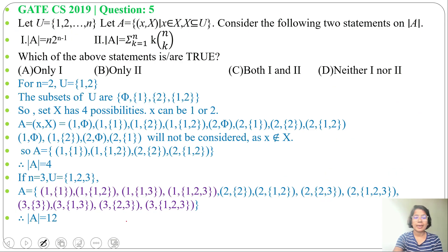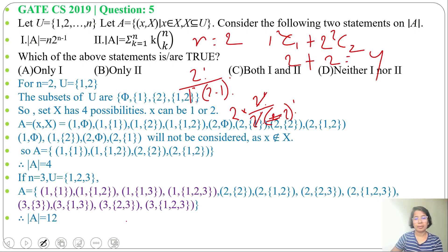Now check second statement. |A| equals summation k equals 1 to n of k times C(n,k). Now for n equals 2, C(2,1) will be 2 factorial divided by 1 factorial times (2 minus 1) factorial. It's 2 plus 2 times C(2,2). C(2,2) will be 2 factorial divided by 2 factorial times (2 minus 2) factorial. So 2 factorial, 2 factorial will cancel. It's just 2. 2 plus 2 is 4. Now check for n equals 3. It will be 12. So we found both statements are true.